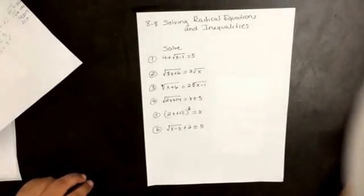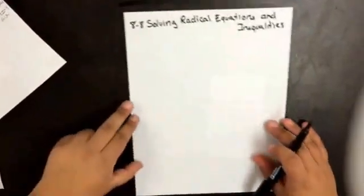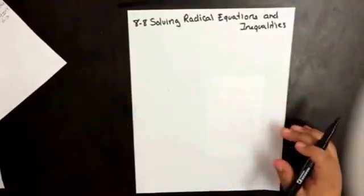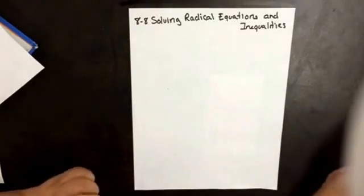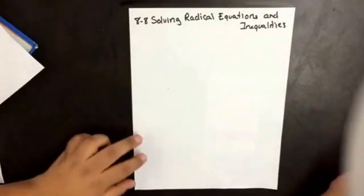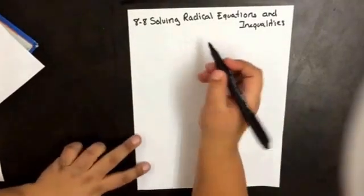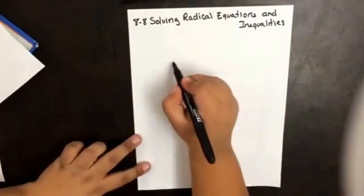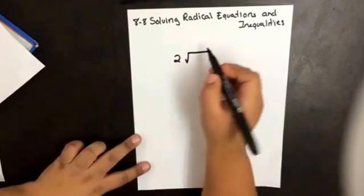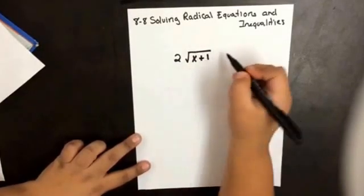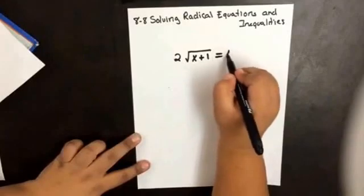Solving Radical Equations and Inequalities. Let's start by solving radical equations. So if I have 2 times the square root of x plus 1 equals 14,